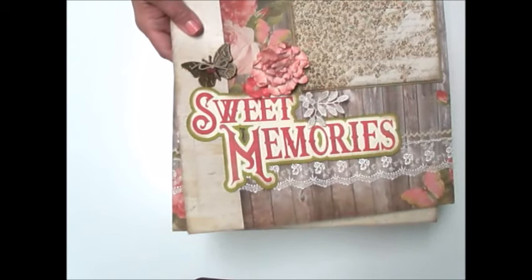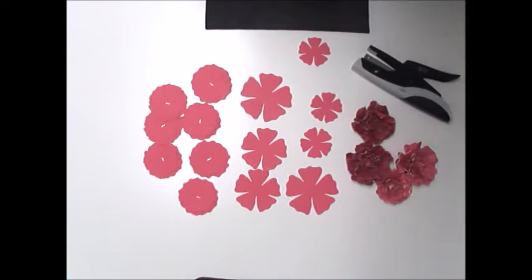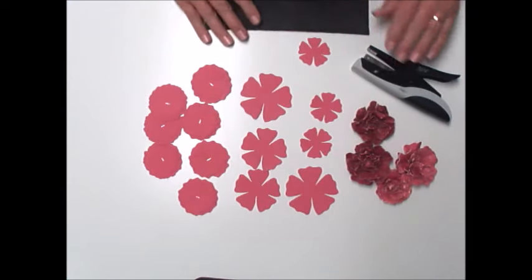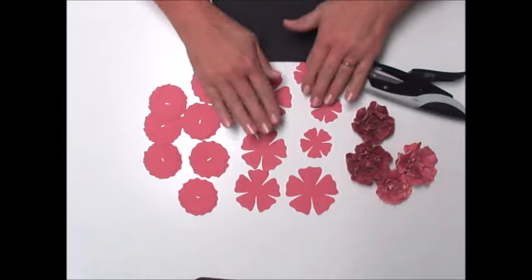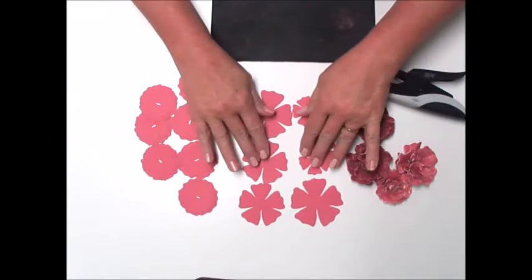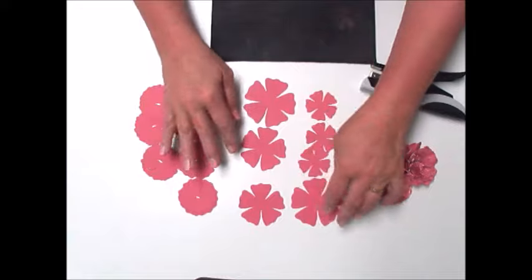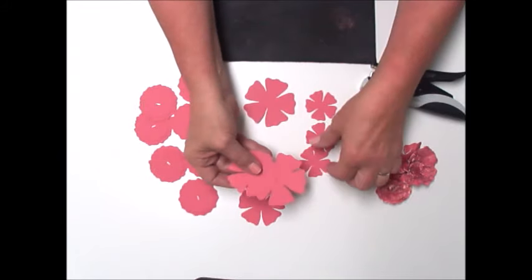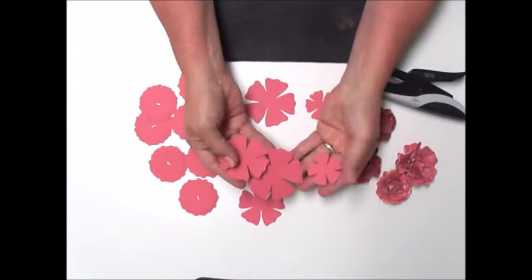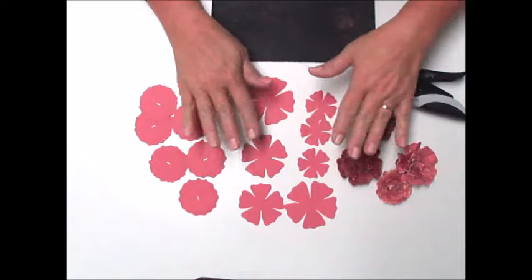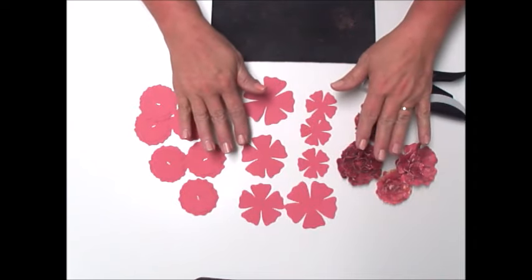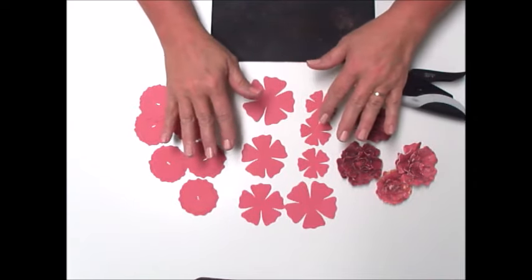Let's get started on the tutorial. You're going to laugh when you see how easy this is. If you have flower punches you just cut different sizes. You can see here where I've got different sizes, and you'll need five or six layers per flower.